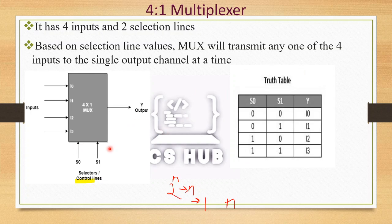The truth table for a 4-to-1 MUX has 4 combinations of S1 and S0. When S1=0, S0=0, the output Y equals I0. When S1=0, S0=1, Y equals I1. When S1=1, S0=0, Y equals I2. When S1=1, S0=1, Y equals I3. This is the truth table for the 4-to-1 multiplexer.